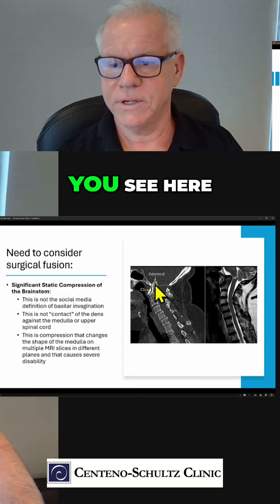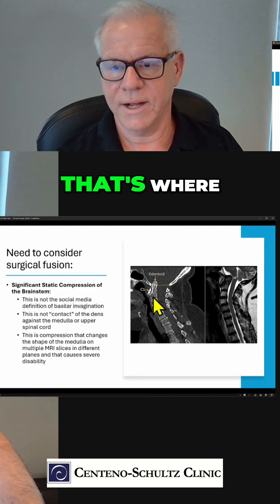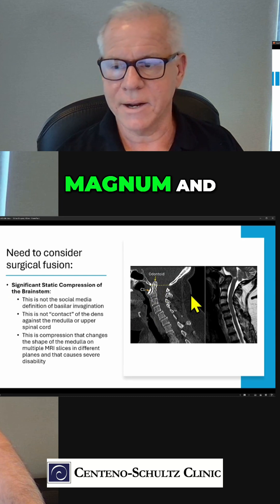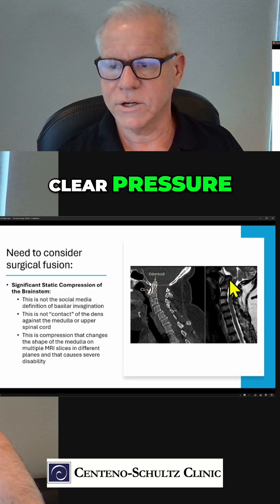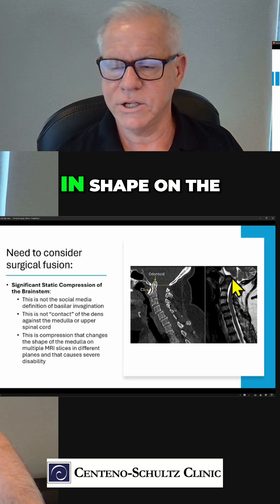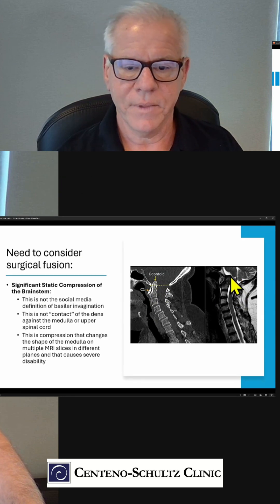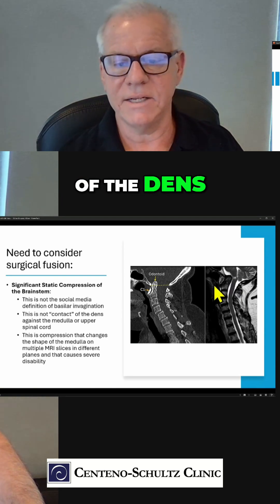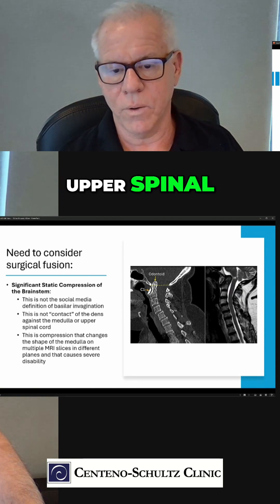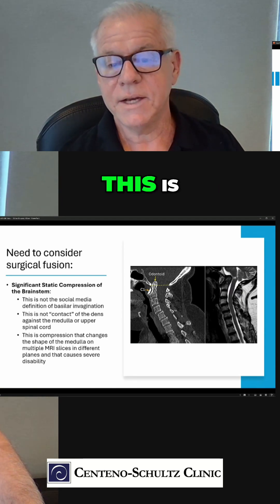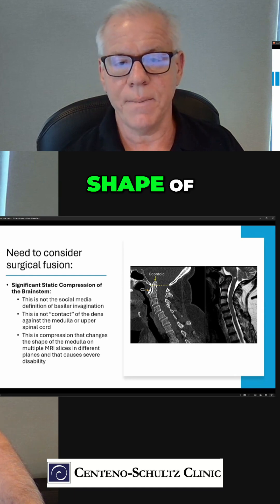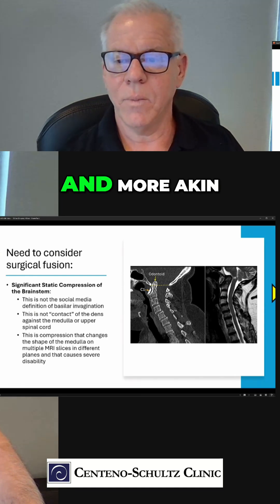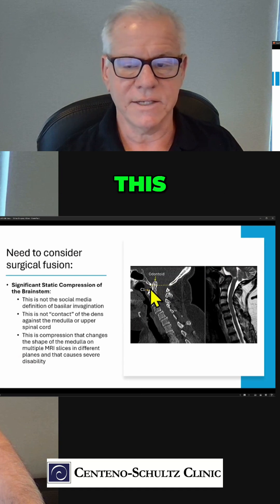Basilar invagination is what you see here. That's where the dens goes up into the foramen magnum, and there's clear pressure and change in shape on the medulla. This isn't just contact of the dens against the medulla or the upper spinal cord — this is compression that changes the shape of that structure.